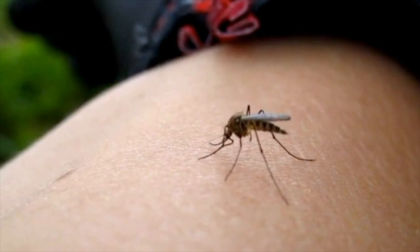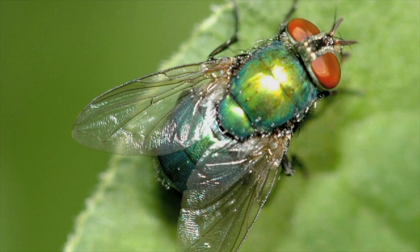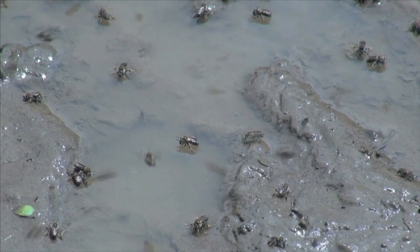Mosquitoes are part of a major group of animals called arthropods. Examples of arthropods that are biological vectors include flies, lice, fleas, and ticks. These arthropods transmit many different types of diseases that affect humans and other animals.